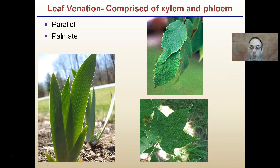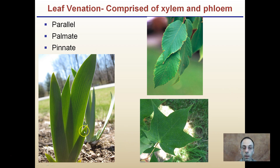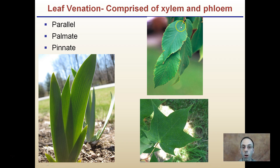Continuing with parallel, palmately, and pinnate venation — three good examples. Parallel venation, palmate venation like the palm of your hand, and pinnate venation with that strong midrib. These veins that we see in different arrangements are composed of both xylem and phloem.